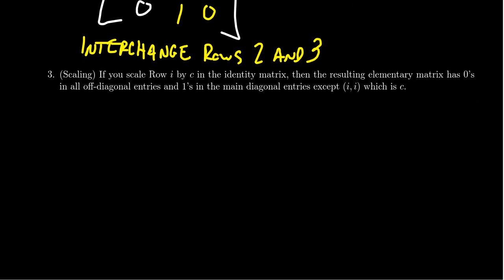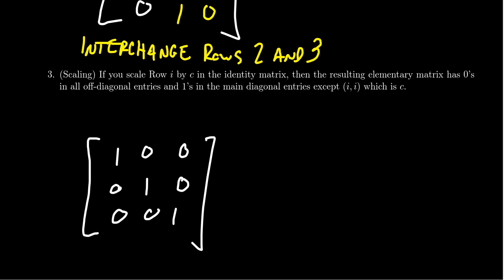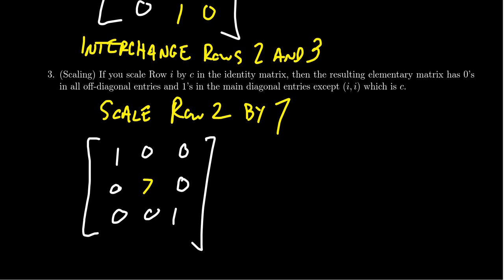The third row operation is scaling: we take a single row i and multiply it by some scalar c. Starting with the 3 by 3 identity matrix, if we scale row 2 by 7, then 1 times 7 gives 7 in the 2,2 position while zeros remain 0. For a scaling elementary matrix, you replace the corresponding diagonal entry with whatever you scaled by.